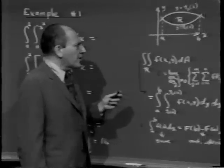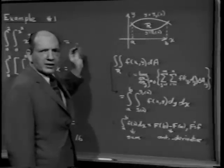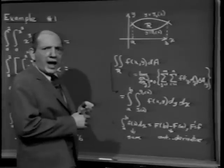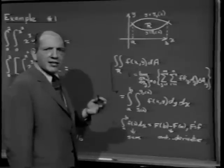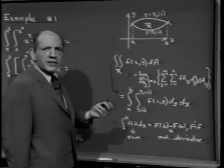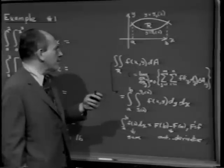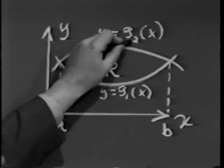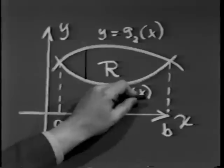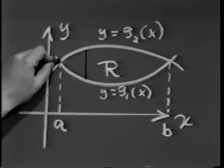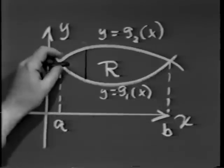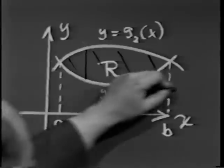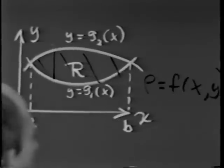Here's where we come to the so-called fundamental theorem. Let me tie what we've talked about today and what we talked about last time. I want you to see that conceptually today's lesson and last time's lesson are completely different, but that the punchline is there's a remarkable connection between the two. Let's suppose I take the region R, which is bounded above by the curve y = g₂(x), bounded below by the curve y = g₁(x), and these two curves intersect at x = a and x = b.